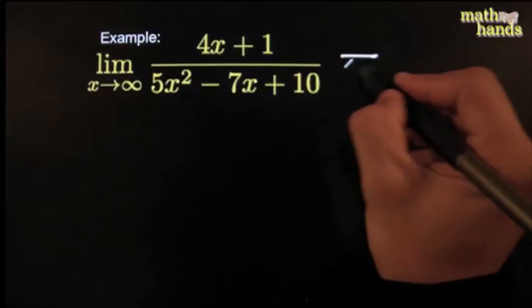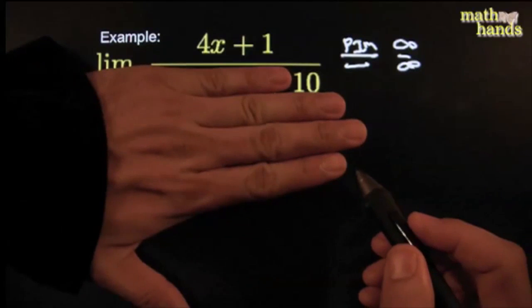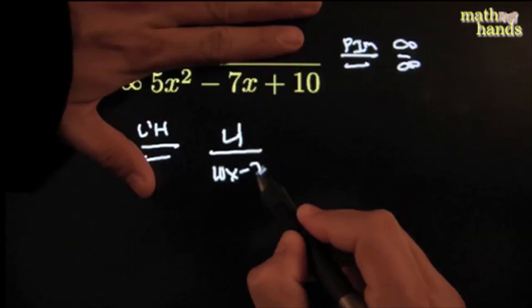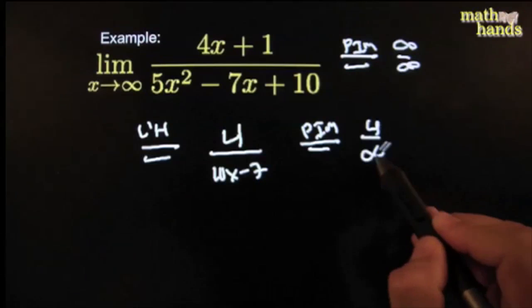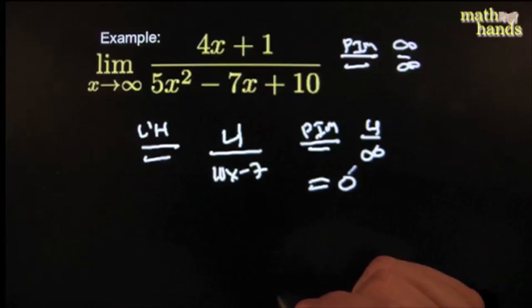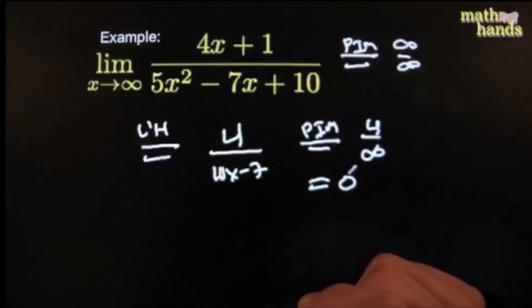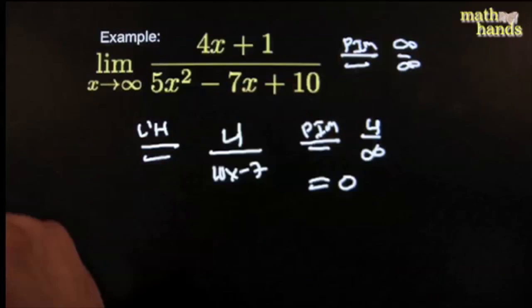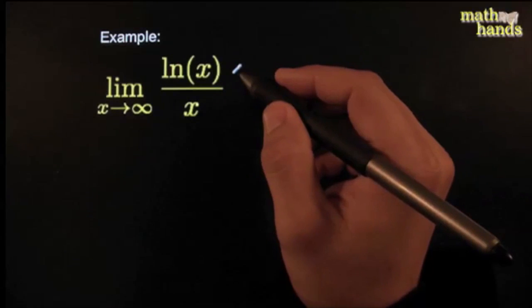Again, try plug-in and that gives infinity over infinity — great, use L'Hôpital. Cover the bottom: derivative of the top gives 4. Cover the top: derivative of the bottom gives 10x − 7. Try plug-in again: 4 over infinity equals zero. Done. Isn't that beautiful and clean and elegant?